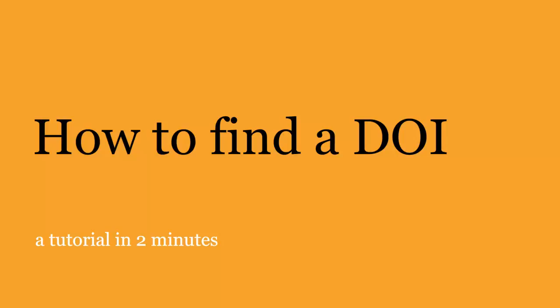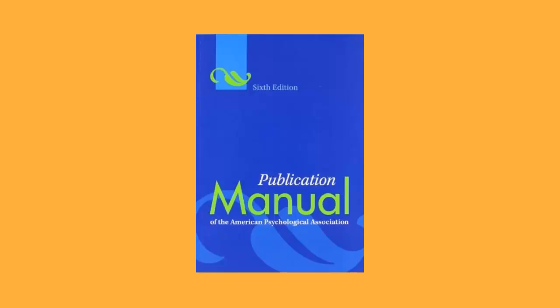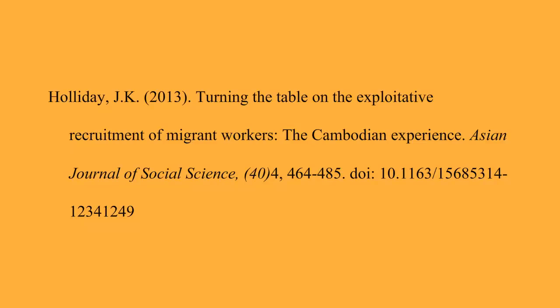How to find a DOI: a tutorial in two minutes. For both print and electronic articles, APA style requires that you include a DOI, or digital object identifier, at the end of your article references. A DOI is a unique number assigned to an article to aid in finding the article online.